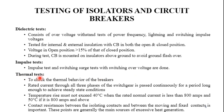The thermal test and mechanical test are type tests on the circuit breaker, conducted according to specification. For the thermal test, the temperature rise must not exceed 40°C when operating under rated normal current of less than 800 amperes, and must not exceed 50°C for 800 amperes and above. These are the different types of tests conducted on isolators and circuit breakers.